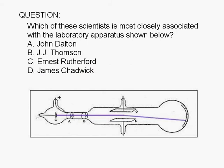This is the apparatus that J.J. Thomson used. It's called a cathode ray tube.